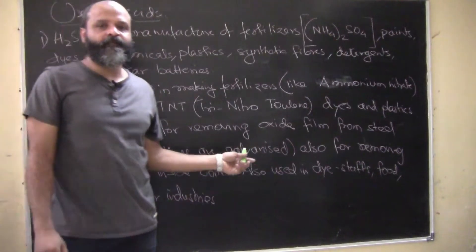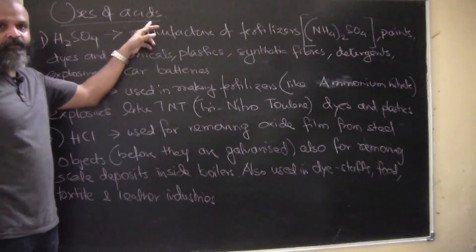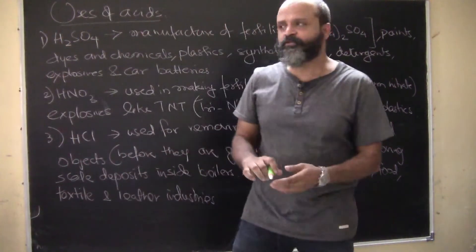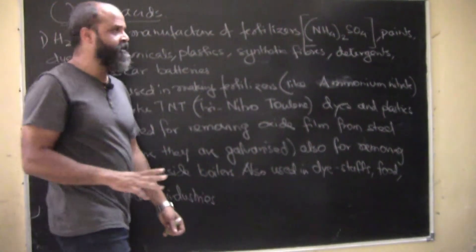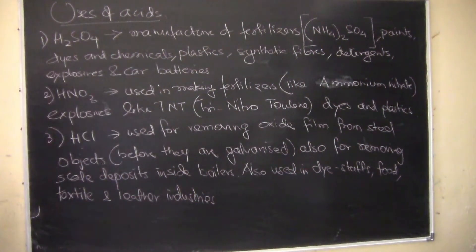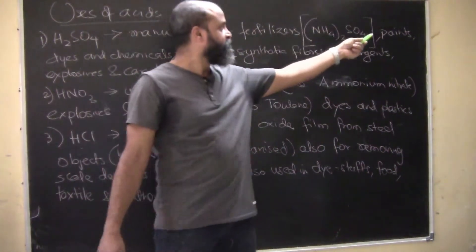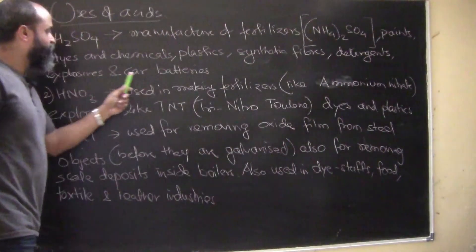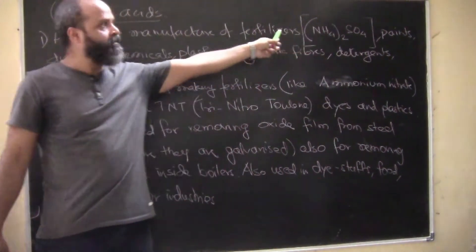Now for the theoretical part - uses of acids. The primary ones are sulfuric acid, nitric acid, and hydrochloric acid. Apart from that, acetic acid is used in vinegar for foodstuffs. H₂SO₄ (sulfuric acid) is used in the manufacture of fertilizers, paints, dyes and chemicals, plastics, synthetic fibers, detergents, explosives, and car batteries.